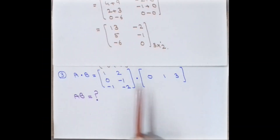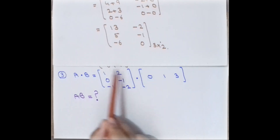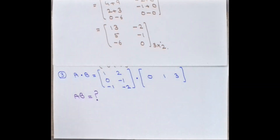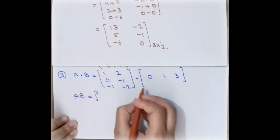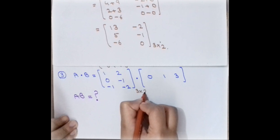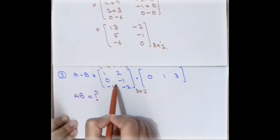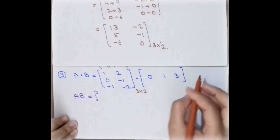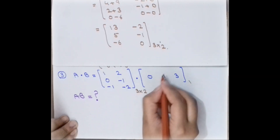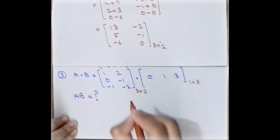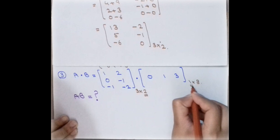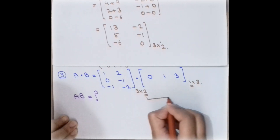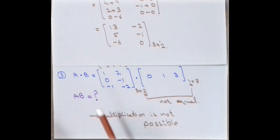In the third example we calculate the product of two matrices. Matrix A is 3 rows by 2 columns, so its order is 3 by 2. Matrix B has 1 row and 3 columns. Since the column of the first matrix (2) is not equal to the row of the second matrix (1), the condition is not satisfied and multiplication is not possible.